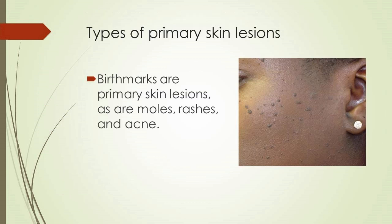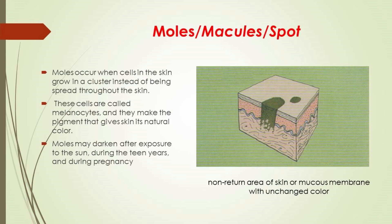Types of primary skin lesions include birthmarks, moles, rashes, and acne. Moles occur when cells in the skin — called melanocytes — grow in a cluster instead of being spread throughout the skin. Melanocytes make the pigment that gives skin its natural color. Moles may darken after exposure to the sun, during the teen years, and during pregnancy.